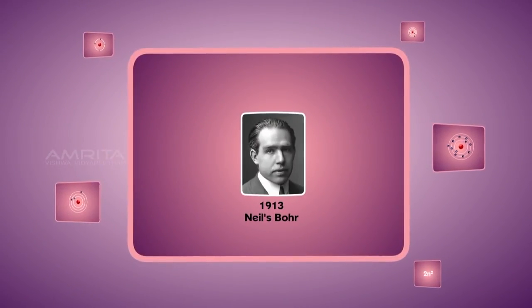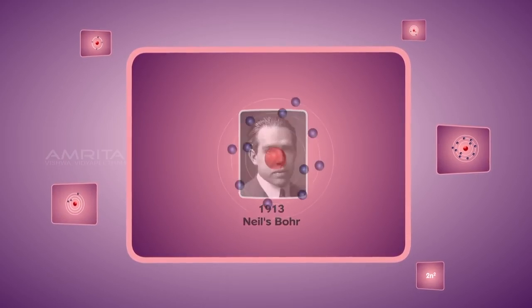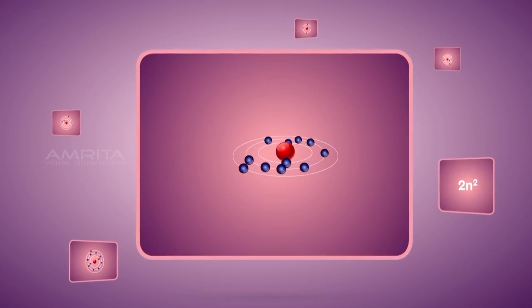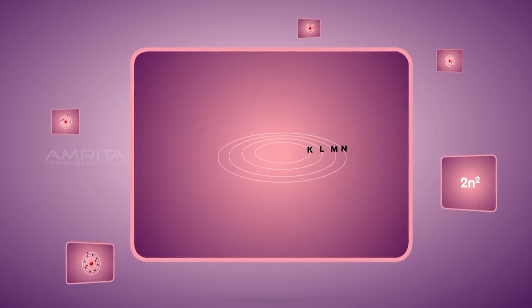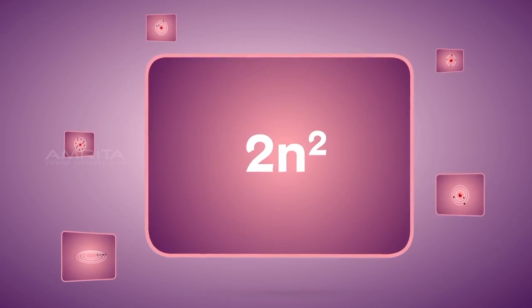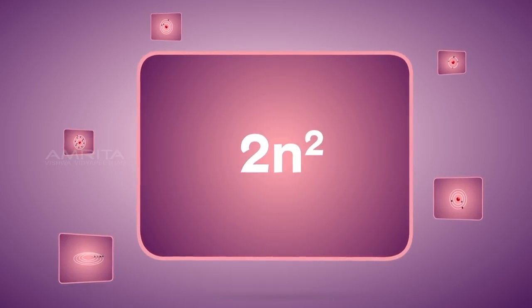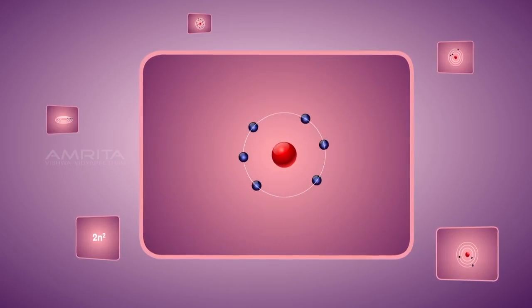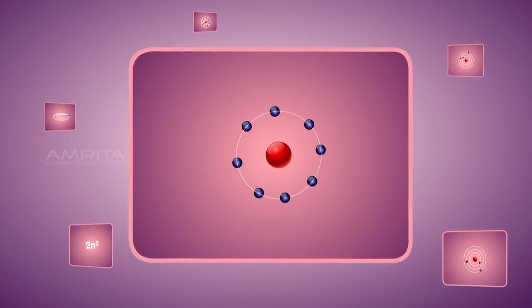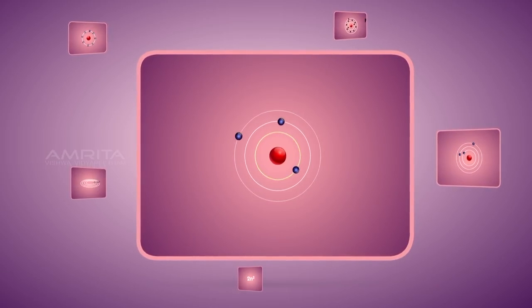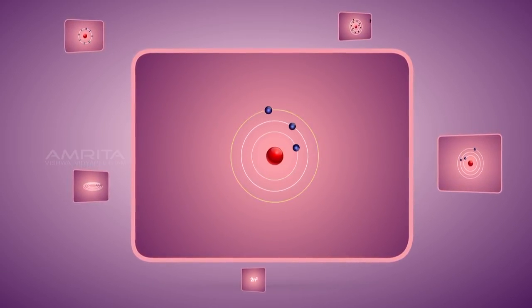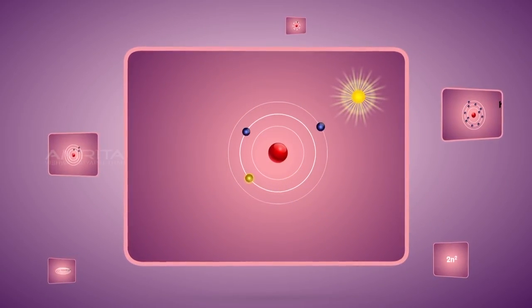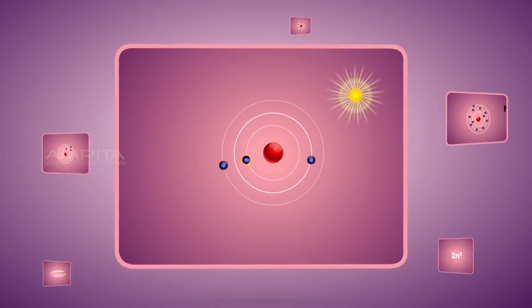In 1913, Danish physicist Niels Bohr proposed an atomic model known as Bohr's atomic model. In an atom, electrons revolve around the nucleus in definite energy levels called orbits or shells. The maximum number of electrons that can be accommodated in a particular orbit is 2n squared. The maximum number of electrons in the outermost shell is 8. The orbit closest to the nucleus has minimum energy and the orbit farthest has maximum energy. Electrons are excited to higher energy levels by absorbing energy and return to lower energy levels by radiating energy.